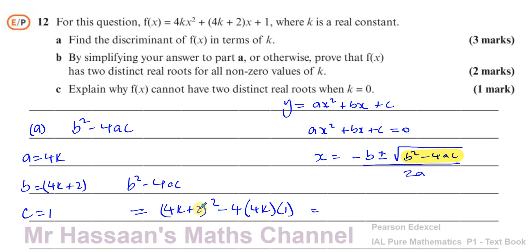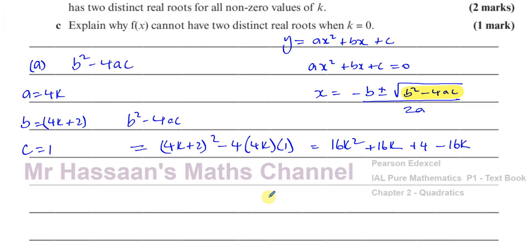Expanding (4k plus 2) squared: 4k times itself gives 16k squared, the middle term is 2 times 4k times 2 which is 16k, and the last term squared is plus 4. Then subtracting 16k. So the discriminant simplifies to 16k squared plus 4.